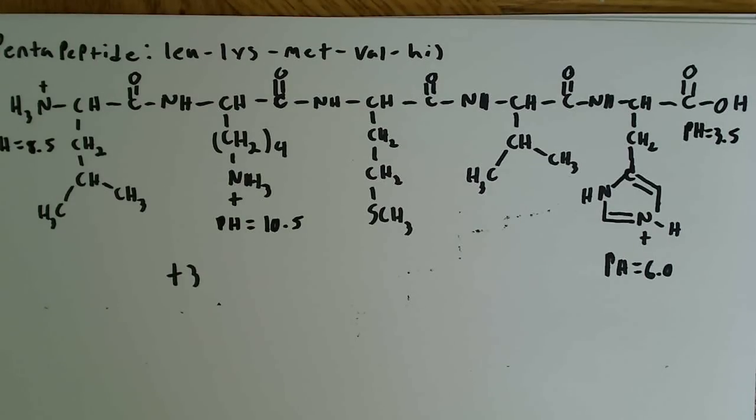So those are the groups right there, and the first thing we'll do then, and maybe I haven't done this in the past videos but I'll do it now because I think it's a good way of working the problem, is to say which one loses its proton first. So we can see that as we're adding equivalents of NaOH to this solution, we're going to lose the carboxyl proton over here in the corner first because that's at a pH of 3.5. So we're starting at a very low pH, say pH 1, and we're adding NaOH, raising the pH.